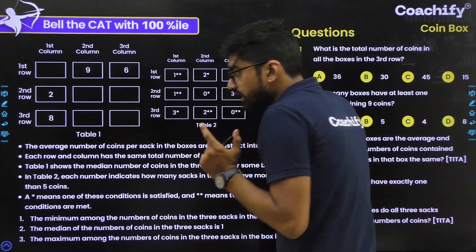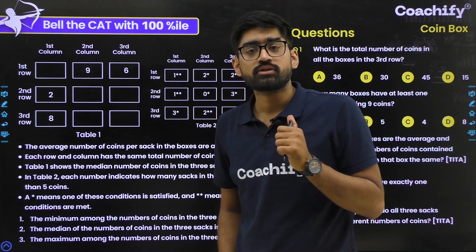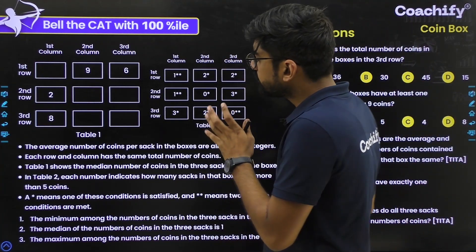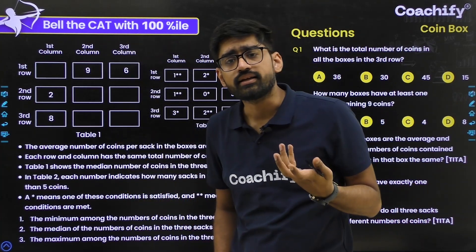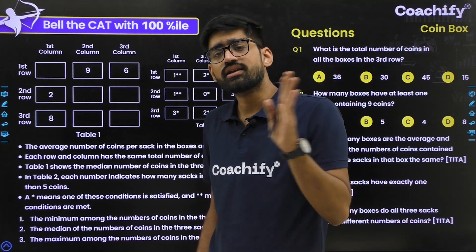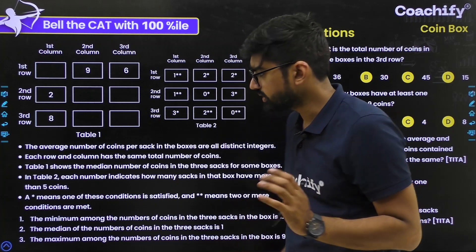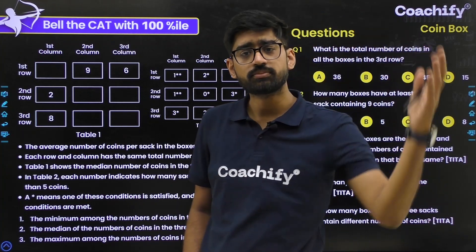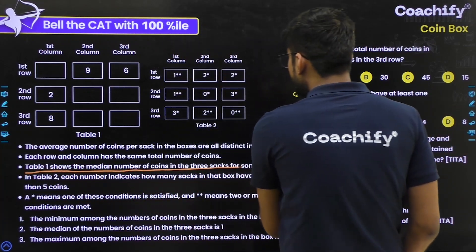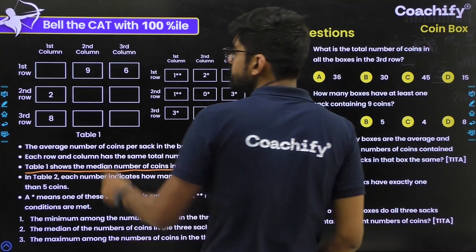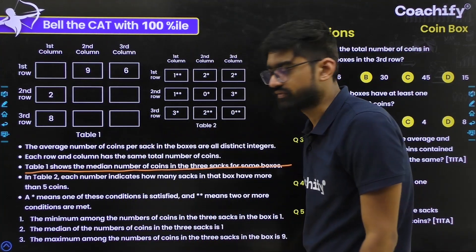Table 1 shows the median number of coins in the three sacks for some boxes. When you arrange the three values in increasing or decreasing order, the middle value is the median. Table 2: each number indicates how many sacks in that box have more than five coins.